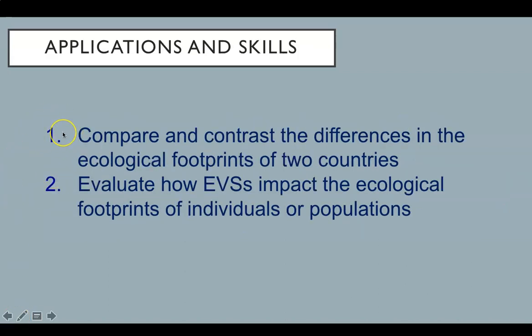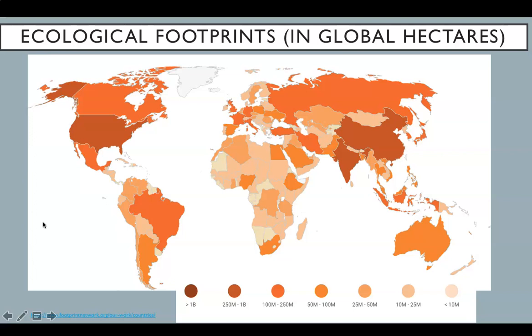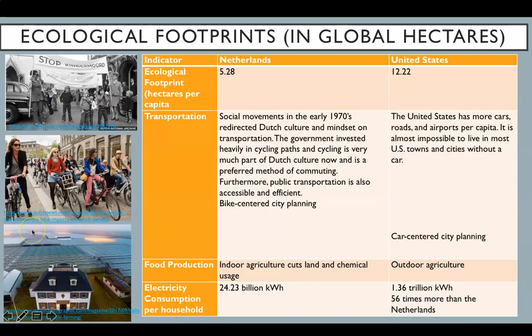You need to be able to compare and contrast the differences in the ecological footprints of two countries, and evaluate how environmental value systems impact the ecological footprints of individuals or populations. Ecological footprints may vary significantly from country to country and person to person, and include aspects such as lifestyle choices or environmental value systems, productivity of food production systems, and land use and industry. If the ecological footprint of a human population is greater than the land area available to it, this indicates that the population is unsustainable and exceeds the carrying capacity of that area. Here you see a map illustrating the fact that ecological footprints vary from country to country — high on the list is the United States, low is Sub-Saharan Africa.